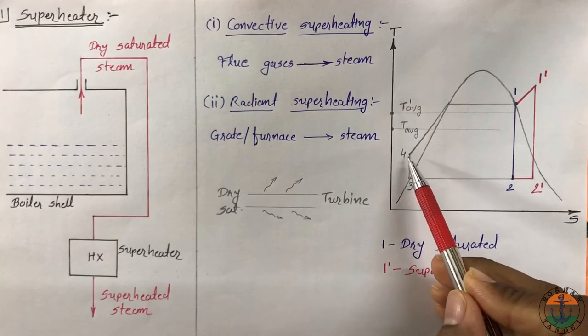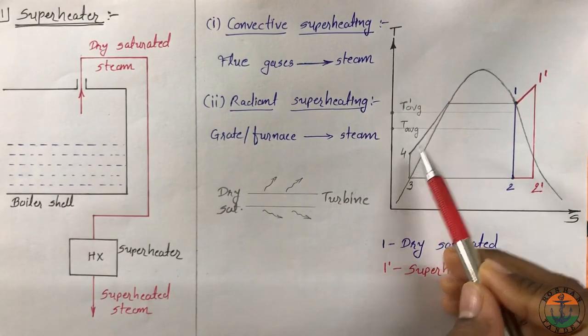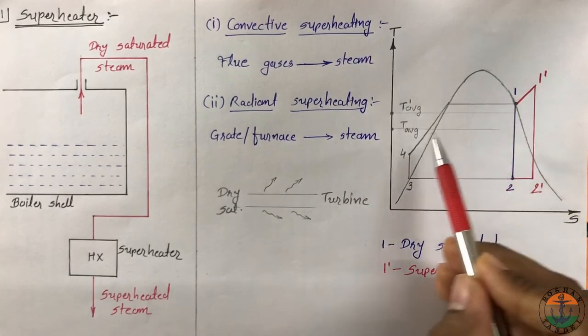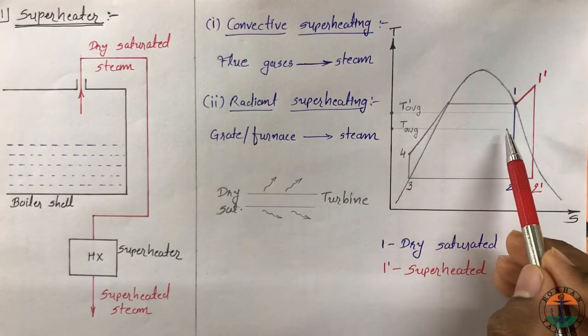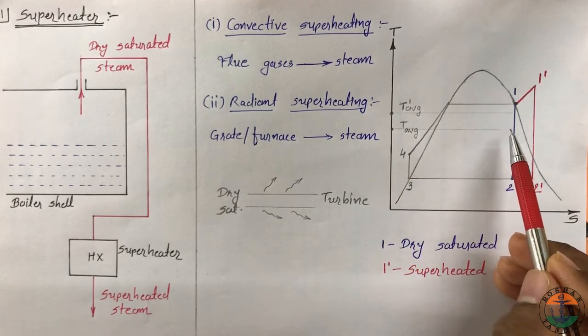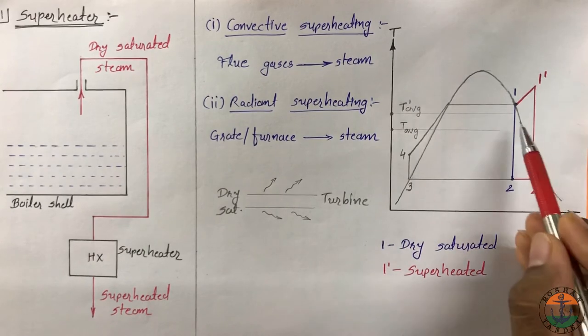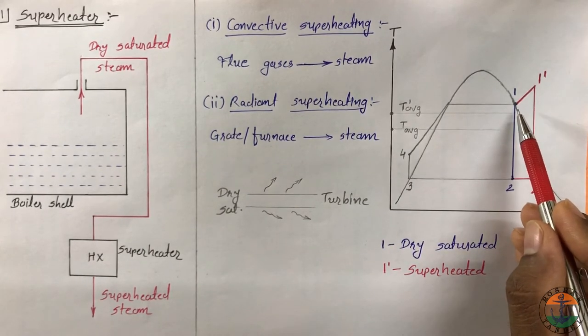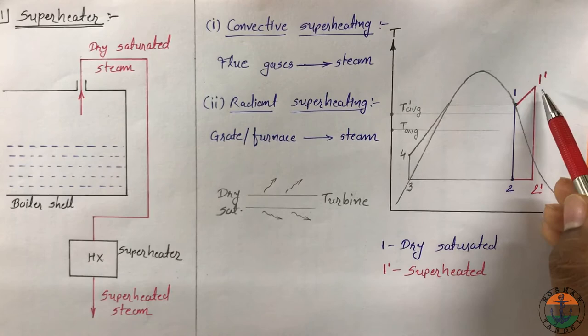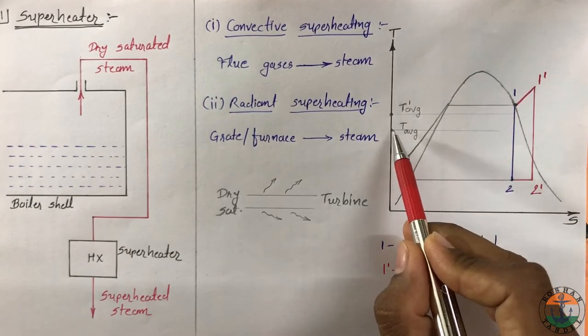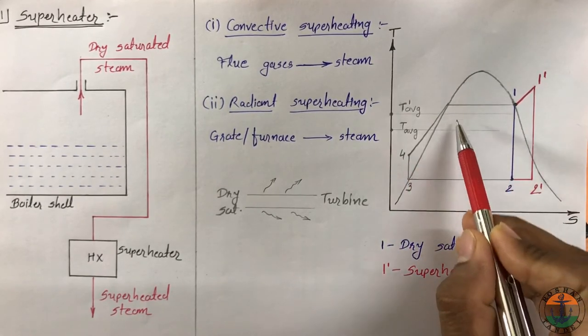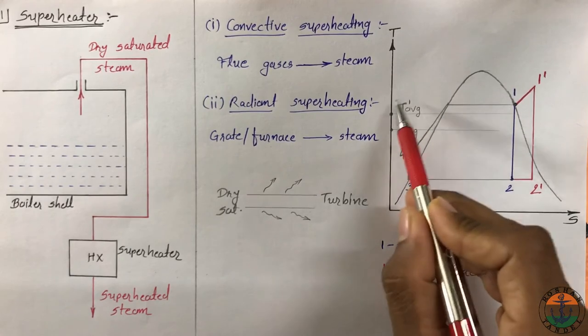Heat is added in the boiler from 4 to 1, and T average is the average temperature of heat addition in case of dry saturated input to the turbine. When you superheat the steam from 1 to 1 dash, its average temperature of heat addition will increase to T dash average.